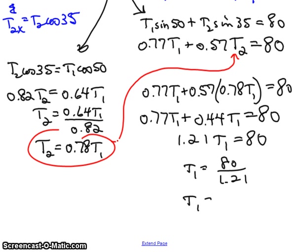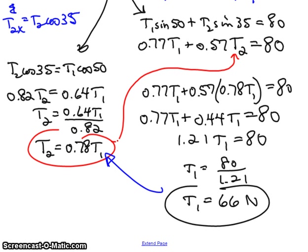And T1 equals 80 divided by 1.21, or T1 equals 80 divided by 1.21 is 66, roughly, rounding it off, newtons. So T1 equals 66 newtons. You can substitute that into here to find a value for T2.